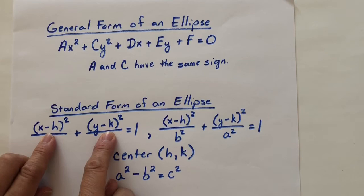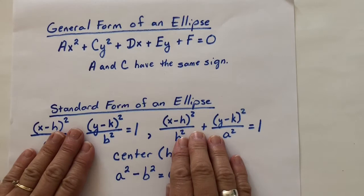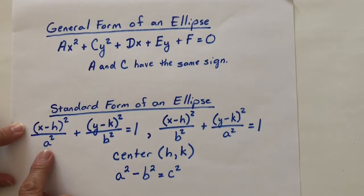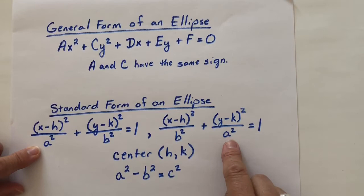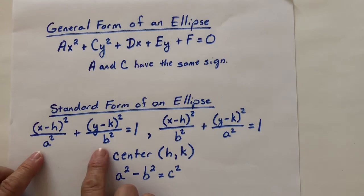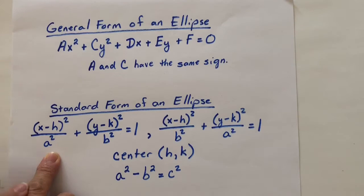And when we write it in standard form, notice we have these nice perfect squares in the numerator. The center is (h,k) in both of these cases. And if you look at it, they at first glance look the same, but notice here on the left the a² is in the denominator of our first term and here the a² is in the denominator of the second one. And that's because the a² is always the larger of the two denominators when we're talking about an ellipse.